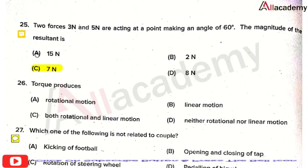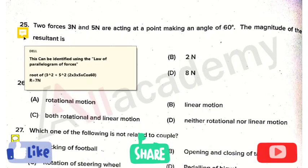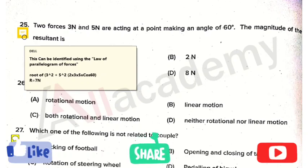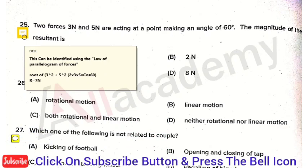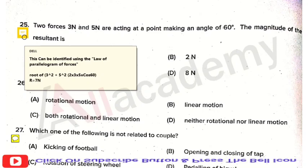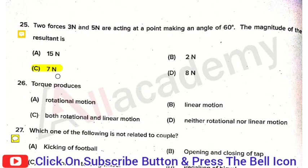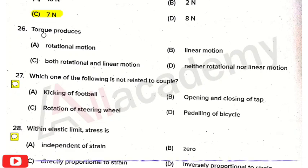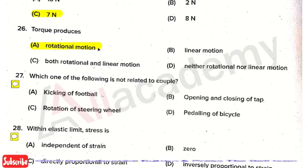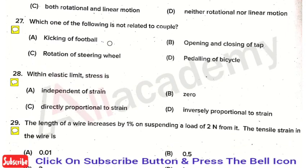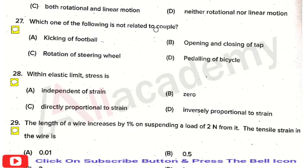The 7 newton resultant is obtained using the law of parallelogram of forces: √(3² + 5² + 2×3×5×cos60°), which simplifies to 7 newton. The next question: torque produces — the right answer is obviously rotational motion. The next question: which one of the following is not related to couple? The right answer is kicking of football.